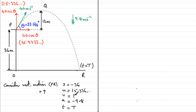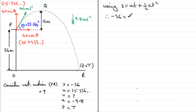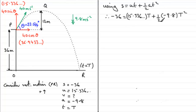We choose the equation that leaves out v: s = uT + ½aT². Substituting in: minus 36 equals 15.336 times T plus a half times minus 9.8 times T squared.